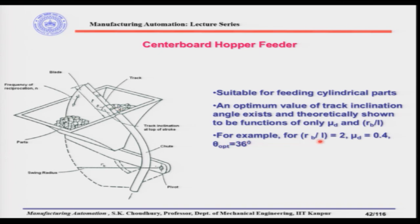The track inclination angle must be optimum. If it is too high, more time is needed for blade reciprocation, reducing production rate since each cycle feeds parts to the assembly machine. For example, for Rb/L = 2 — where Rb is the swing radius and L (small l) is the length of the track — and a dynamic coefficient of friction μd = 0.4, the optimum angle is around 36 degrees. These values are given experimentally from a calibration curve relating Rb/L and μd to the optimum angle.